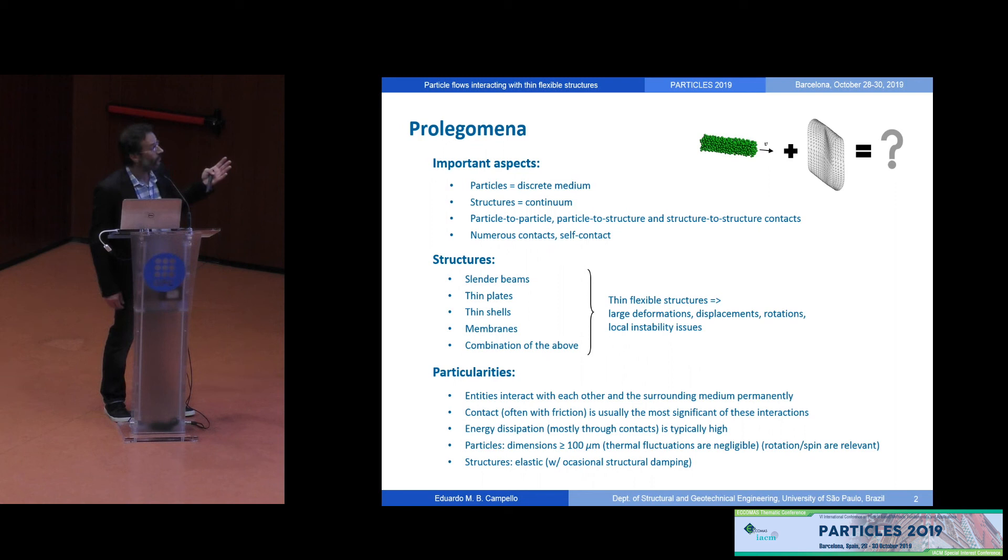First of all, obviously, particles represent discrete medium, whereas structures are idealized as a continuum. There are particle-to-particle, particle-to-structure, as well as structure-to-structure contact, and these contacts are typically numerous. And there can be also self-contact. That is, a structure can touch itself. It's very usual. We have to deal with this. For structures here, I mean slender beams, thin shells, thin plates, membranes, and occasionally a combination of all of these. That is to say, I mean thin, flexible structures, things that have rotational degrees of freedom and are very flexible, undergoing large deformations, large displacements, large rotations, and occasionally local instability issues.